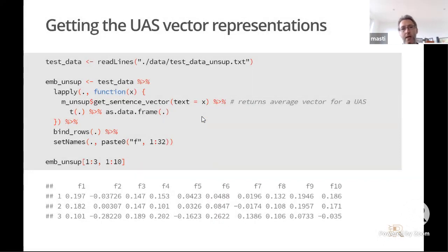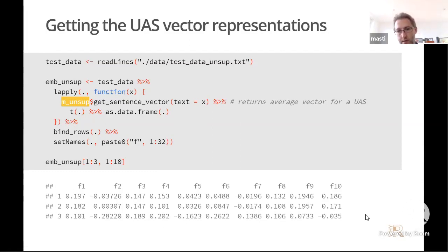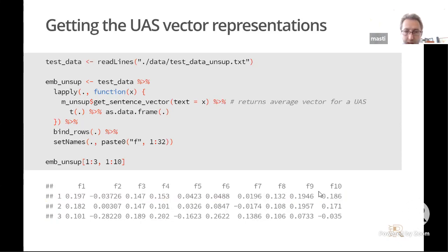Once the model is trained, we pass new user agent strings through it to generate feature vectors. The key command is get_sentence_vector, which returns an average vector for a given user agent string. At the bottom of the slide you can see example output: the first 10 elements of each vector for the first three documents in the test set. This is how these features would eventually enter machine learning models.